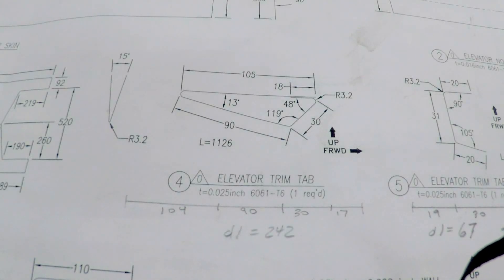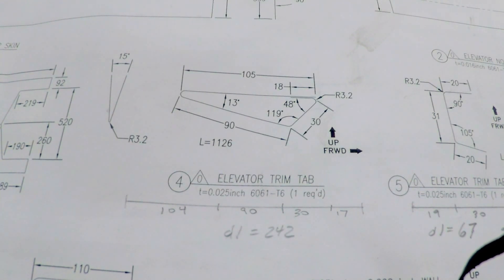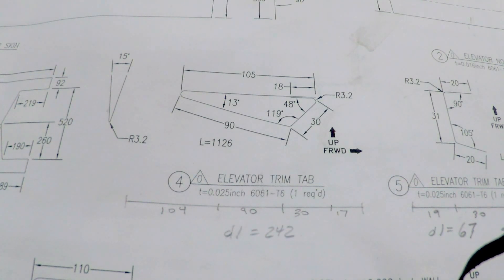Welcome back fellow aircraft builders and aviation enthusiasts. Today I want to talk about setting up your bend lines and accounting for material thickness. In a previous video, one of my very first YouTube videos on this project, I somewhat mistakenly reported that you do not have to pay attention to material thickness when forming parts according to the drawings that Zenith provides. That is somewhat true in some cases but not entirely true in others, and I'll get into that now.